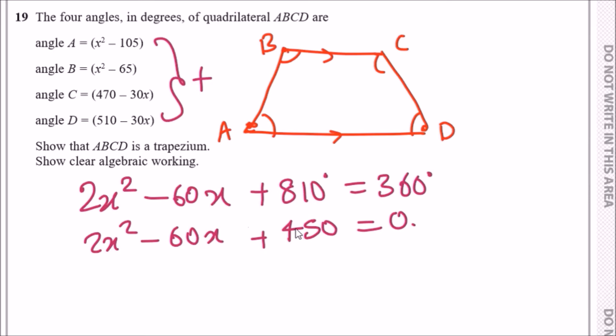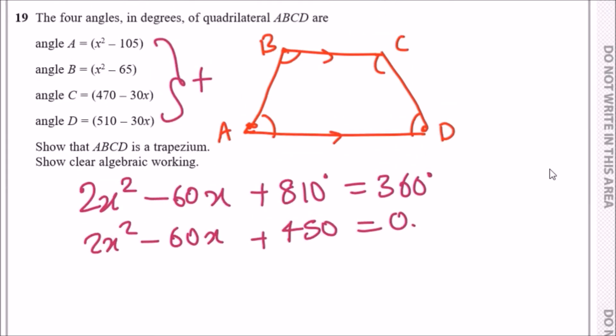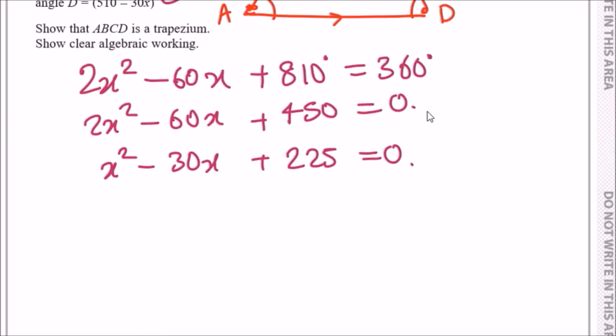To make your life easy, just divide this all by two to simplify it. So x squared minus 30x plus 225 equals zero. Almost there. Now let's go ahead and factorize this.